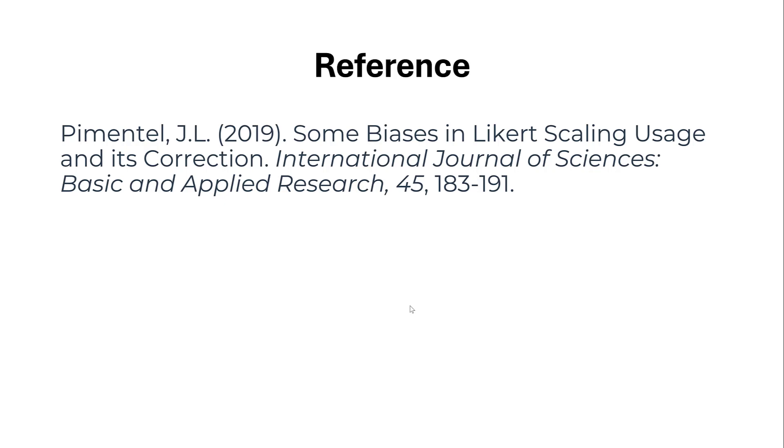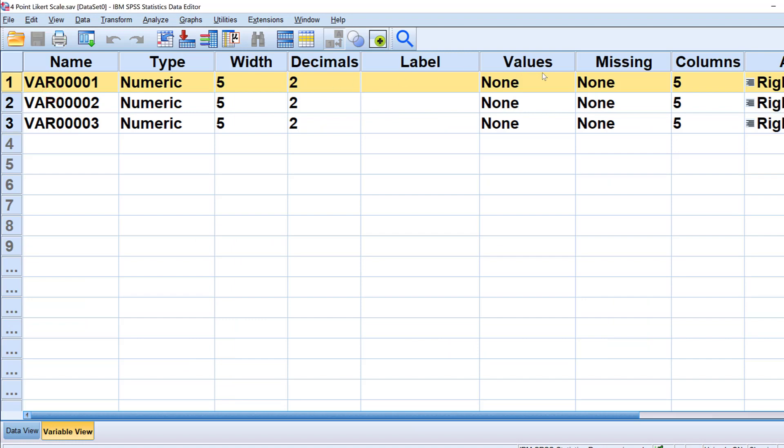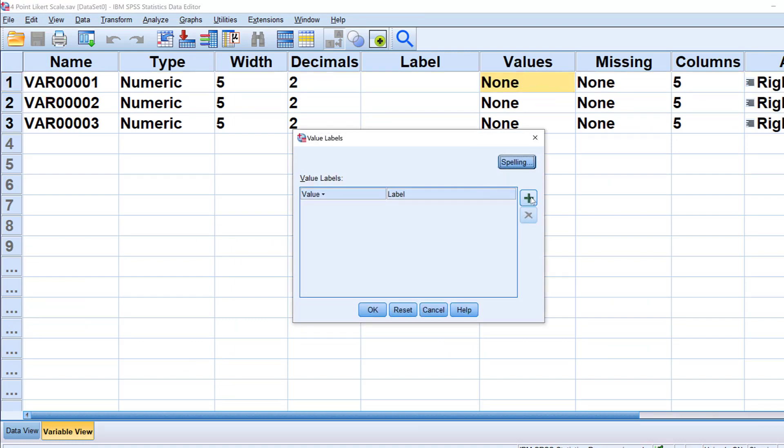Let's move to the practical study. In this data we have three statements or variables and we have five respondents rating these items on a four-point Likert scale from one, strongly disagree, to four, strongly agree. I can label them: put one as strongly disagree and then two as disagree.